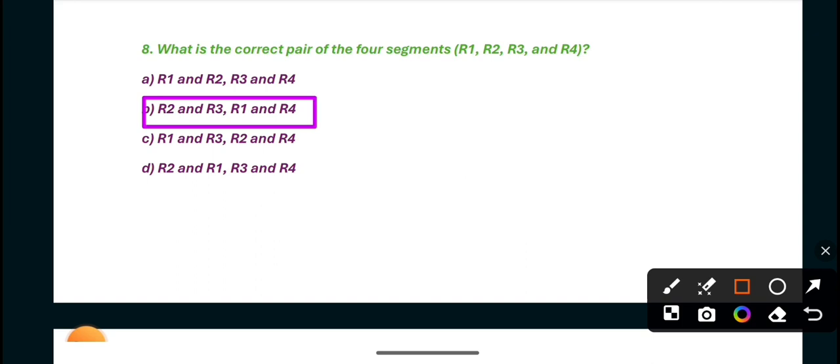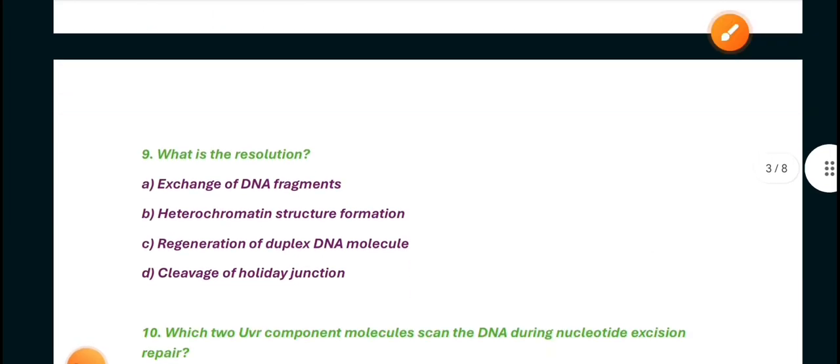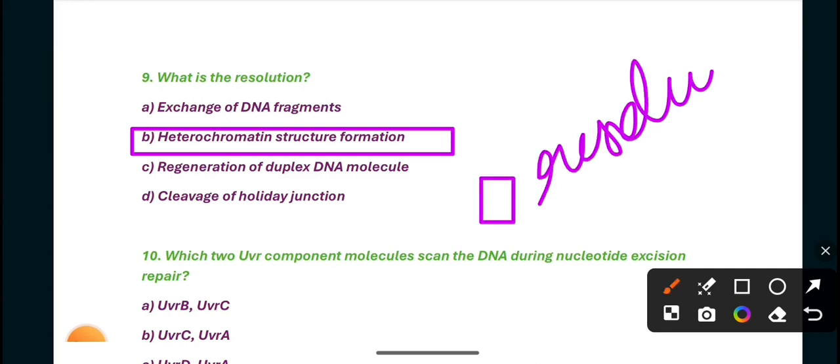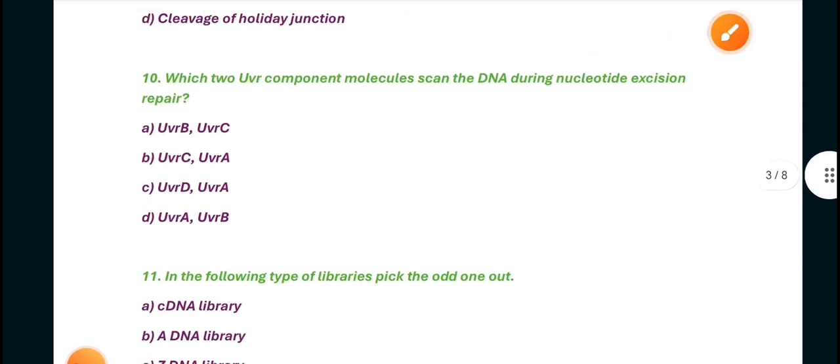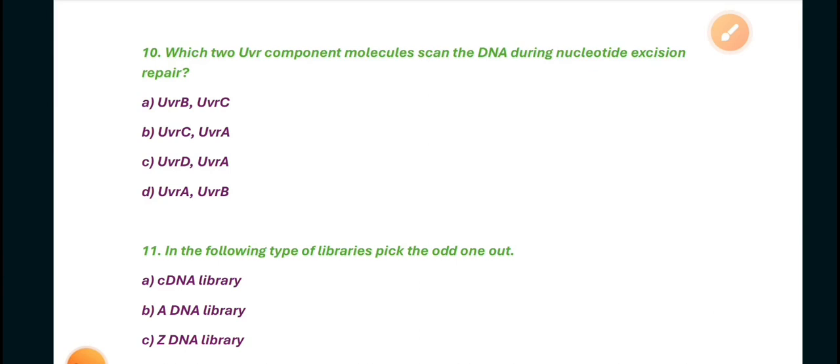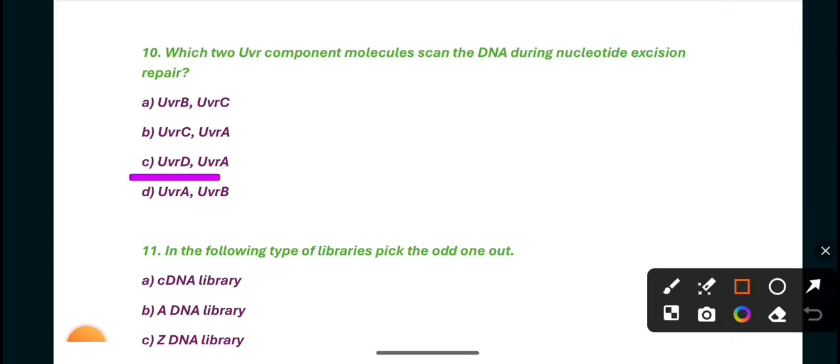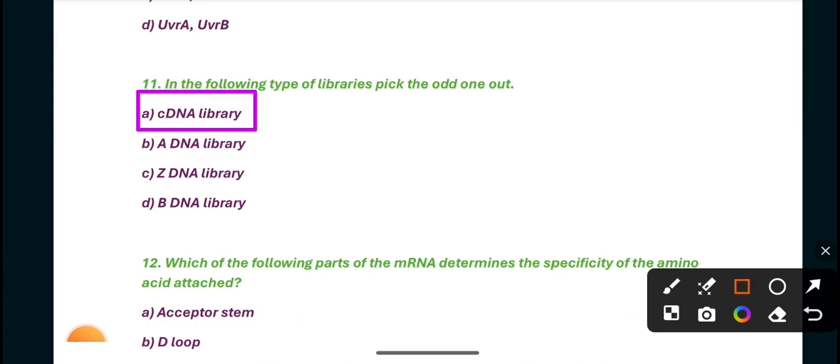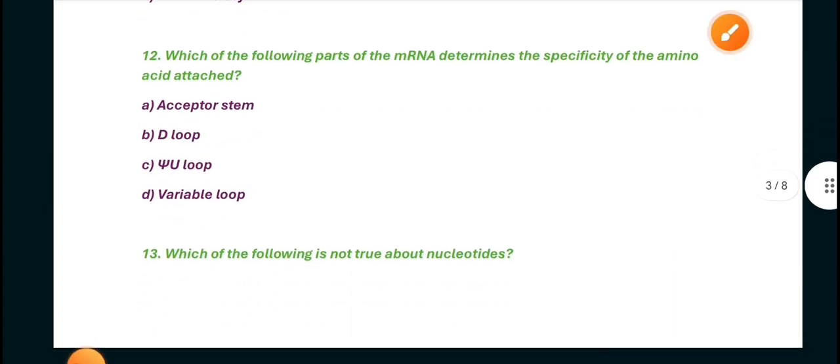Question nine: What is resolution? In the process of homologous recombination, DNA molecules are regenerated by the process of genetic exchange. This is known as the process of resolution. Next is which two UBR component molecules scan the DNA during nucleotide excision repair? Then D is the right answer, UBR A and UBR B. Next, in the following types of libraries, pick the odd one out. cDNA library is the odd one out.